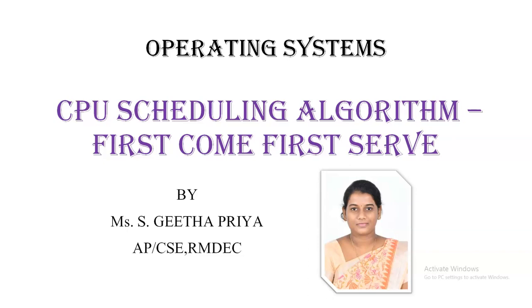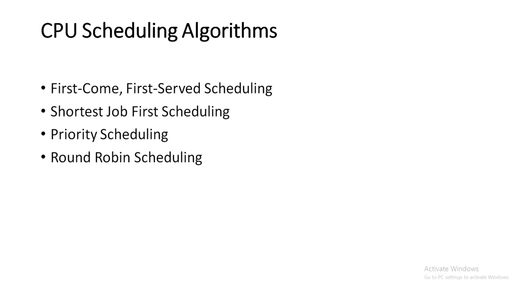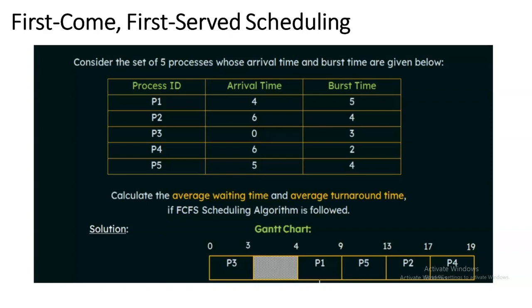Hello everyone. In this lecture we will be seeing about the First Come First Serve scheduling algorithm. In CPU scheduling algorithms we have four types of scheduling: First Come First Serve, Shortest Job First, Priority, and Round Robin. In this video we will be particularly covering the First Come First Serve scheduling algorithm. How FCFS works: whichever process comes first, that process will be served first by the CPU. The CPU will complete that process and then move to the next upcoming process.